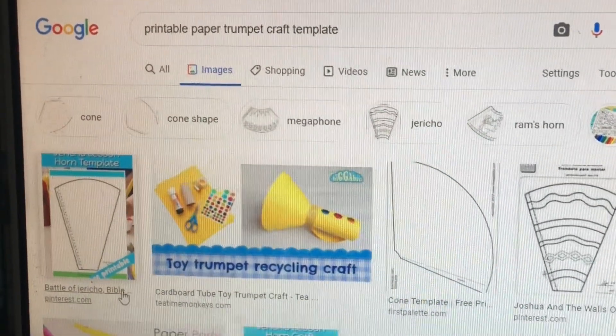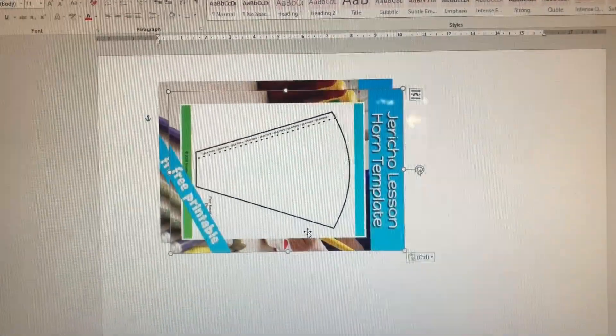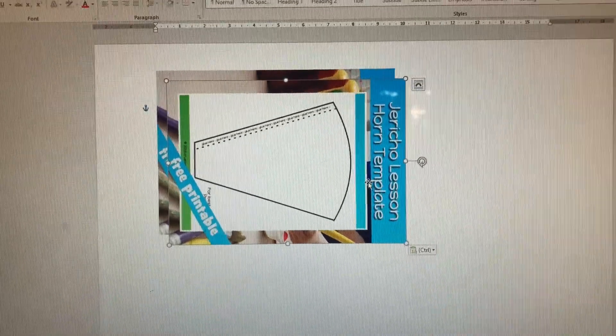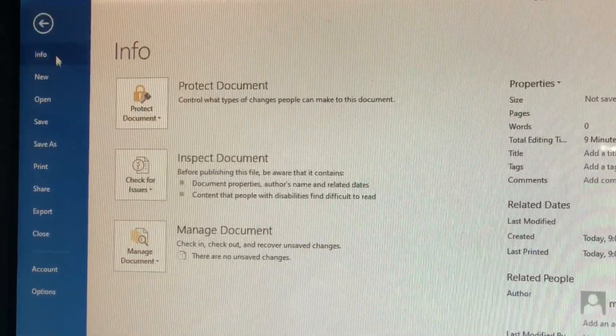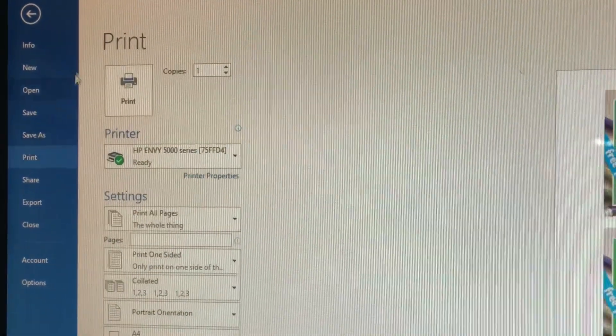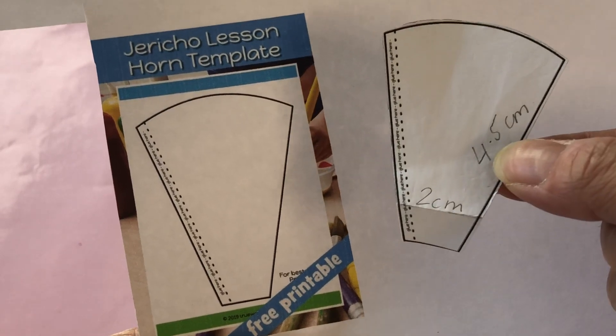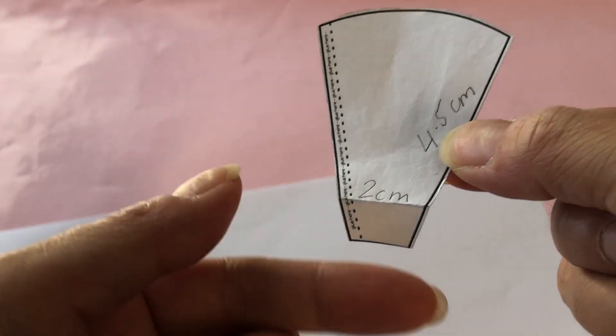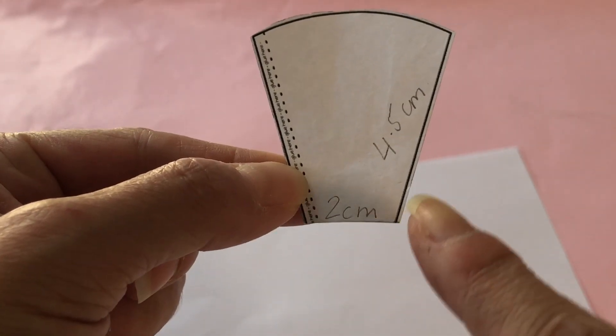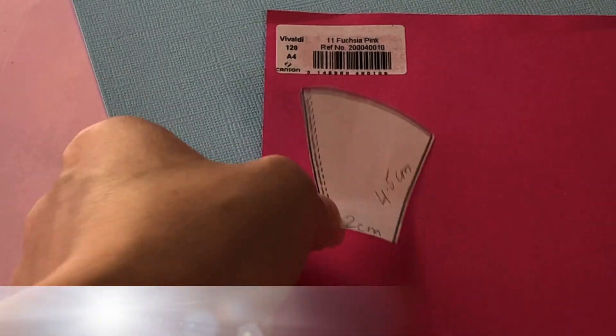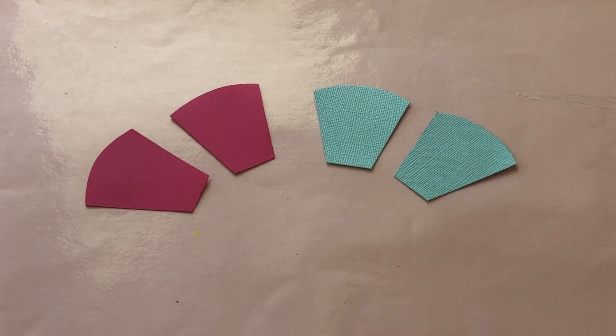To craft our party blowers, we searched Google for paper trumpet craft templates. This horn printable by True Way Kids was the first to pop up. Copy into MS Word, then resize for our dolls. We made ours 5.5 centimeters high by 1.5 centimeters wide. Print out your template. Still, our image was slightly too narrow, so we folded the short side to make the base 2 centimeters wide.